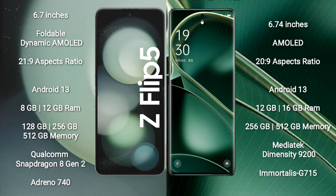The Oppo Find A6 comes with 12GB or 16GB RAM and 256GB or 512GB of internal storage. It is powered by the MediaTek Dimensity 9200 processor with a Mali-G710 GPU.